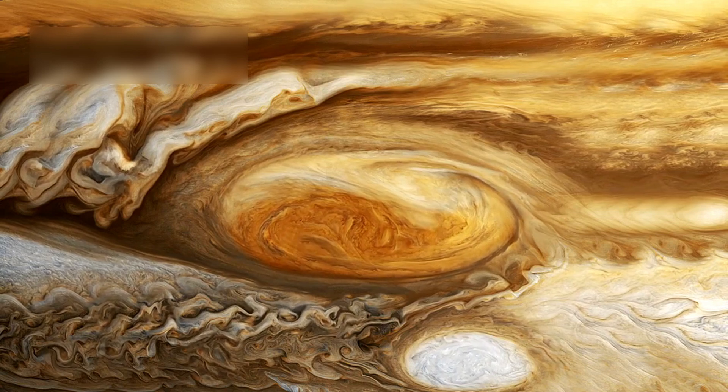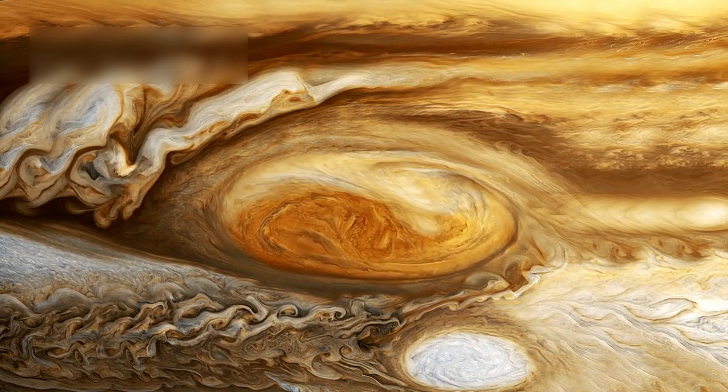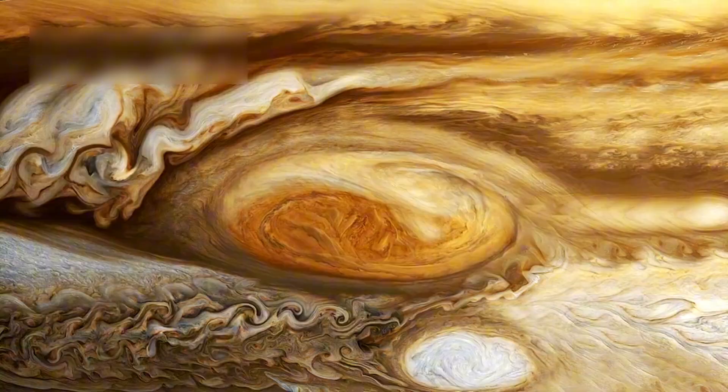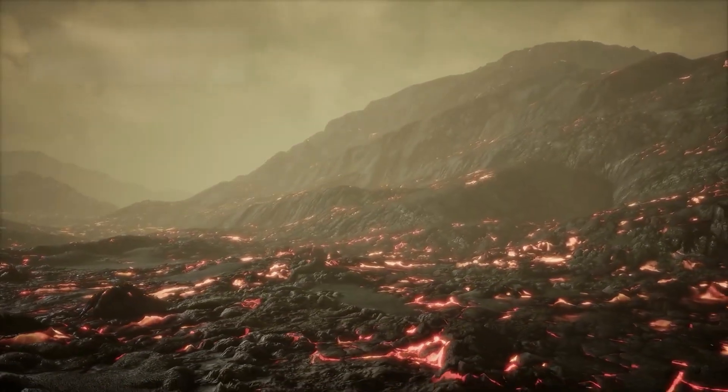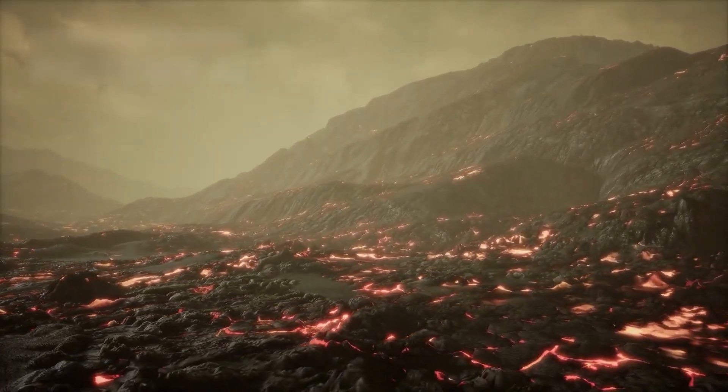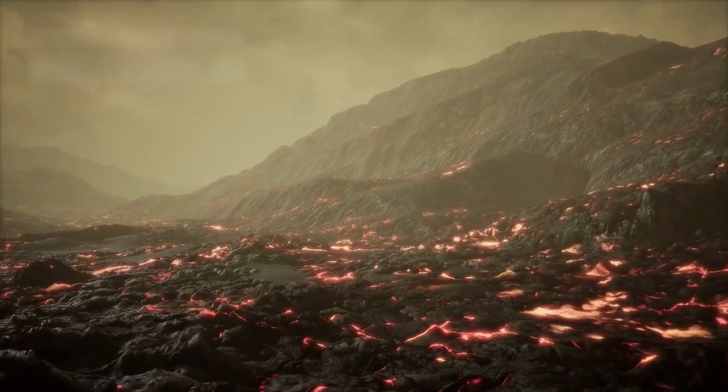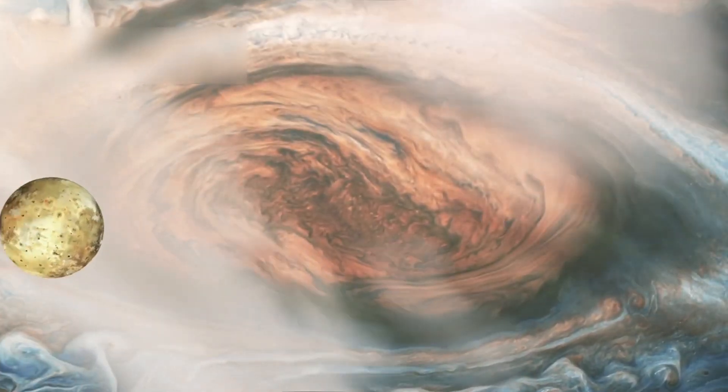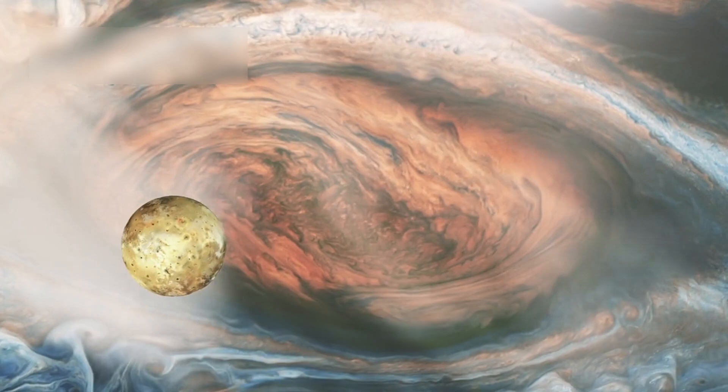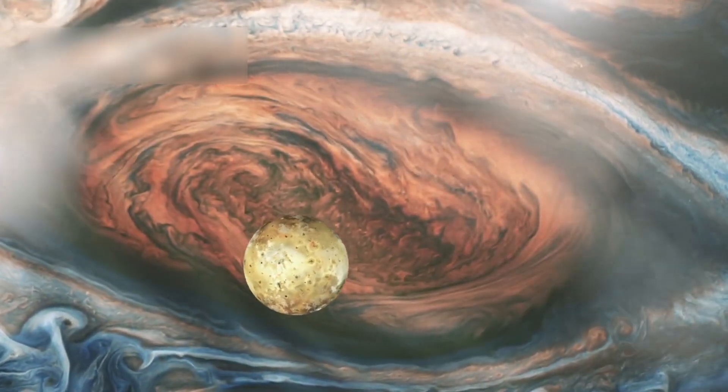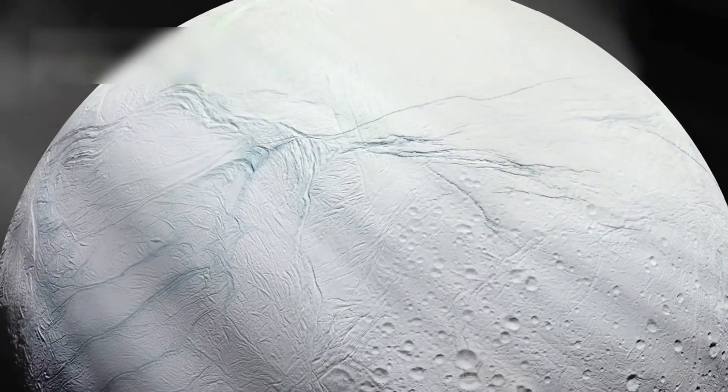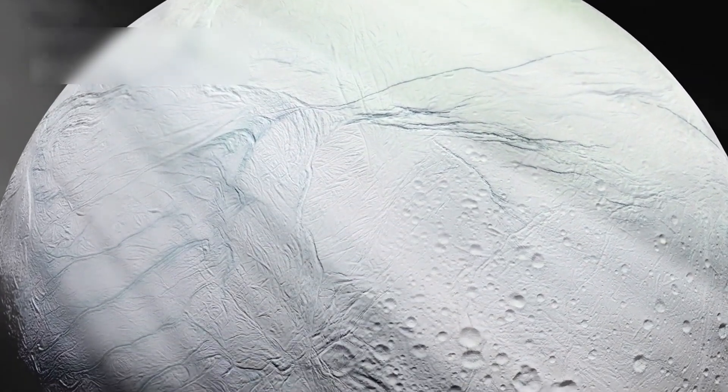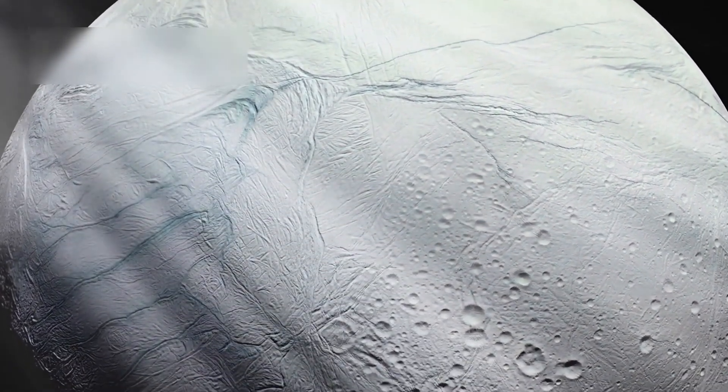Through Jupiter's stormy clouds, the Voyagers revealed red spots and massive swirling weather systems. One of the most important discoveries was that Io had active volcanoes bursting through its cracked surface. That made Io the most volcanically active object known, far more dynamic than Earth's mountains. This forced scientists to rethink the behavior of outer moons and what lies below their frozen crusts.